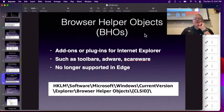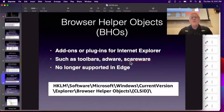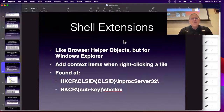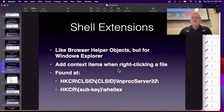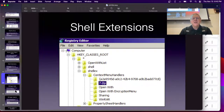Browser helper objects are the plugins for Internet Explorer. They're no longer supported in Edge, so this is probably not terribly relevant unless you're still using Internet Explorer, which unfortunately a lot of corporations are. Then there are shell extensions — when you right-click something like an image, you have extra options. This is where you add those extra context menus. For example, if you've installed 7-Zip, it shows up as a context menu handler so when you right-click a file there's a 7-Zip option.